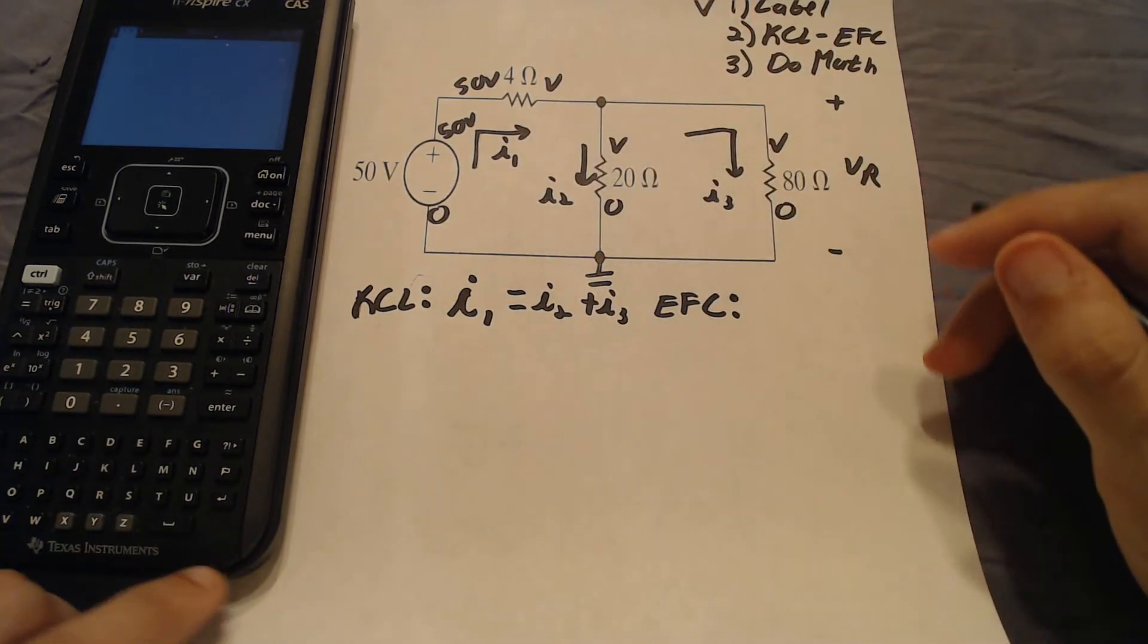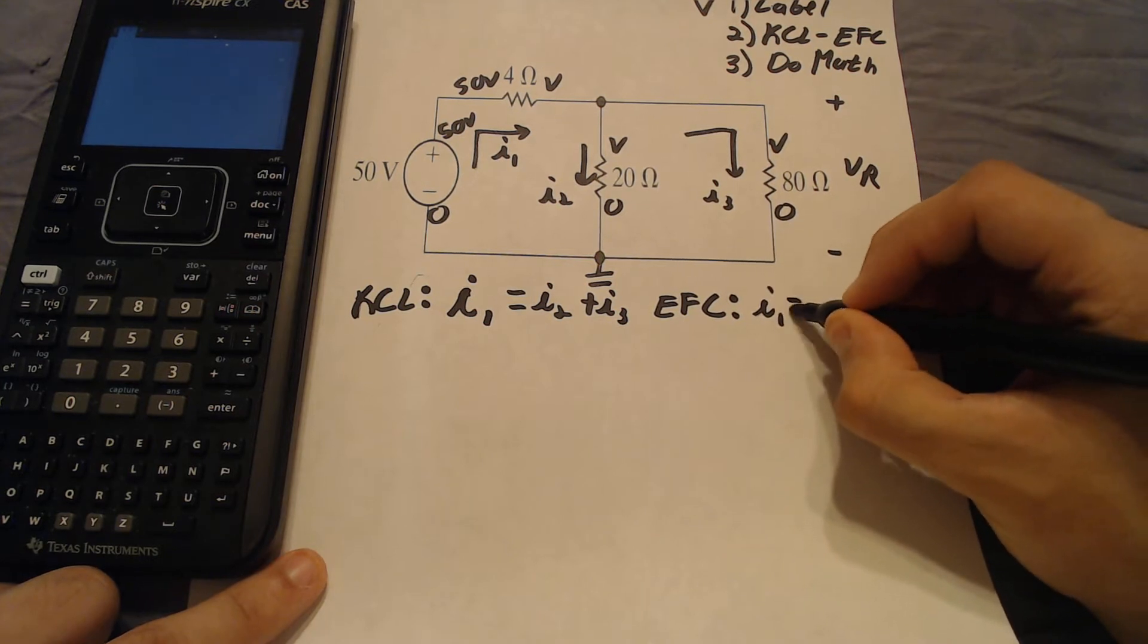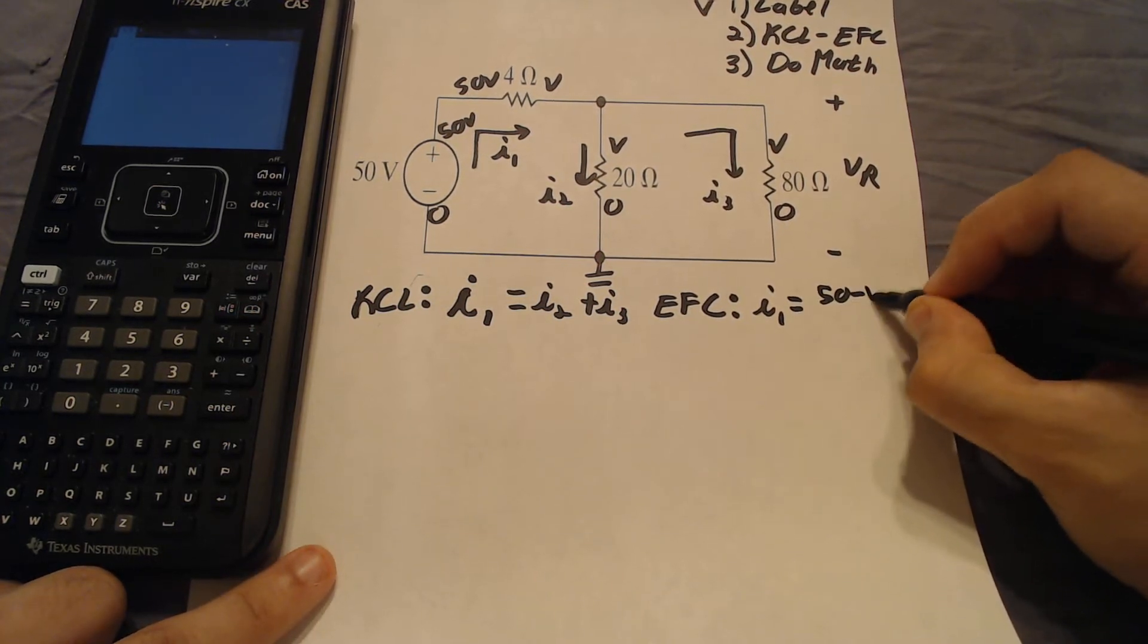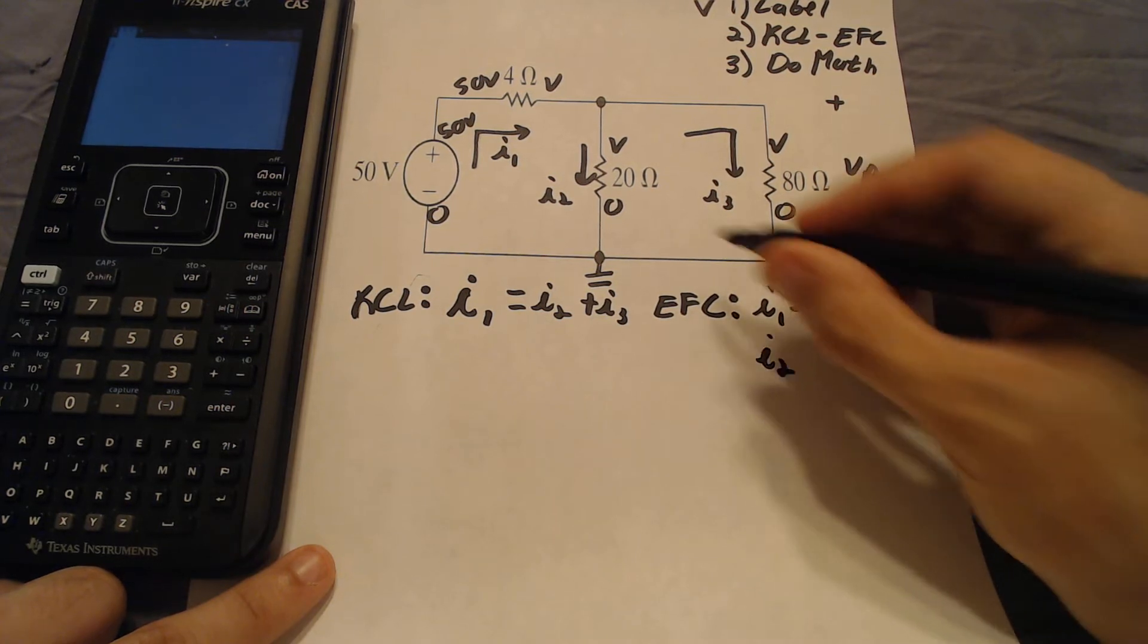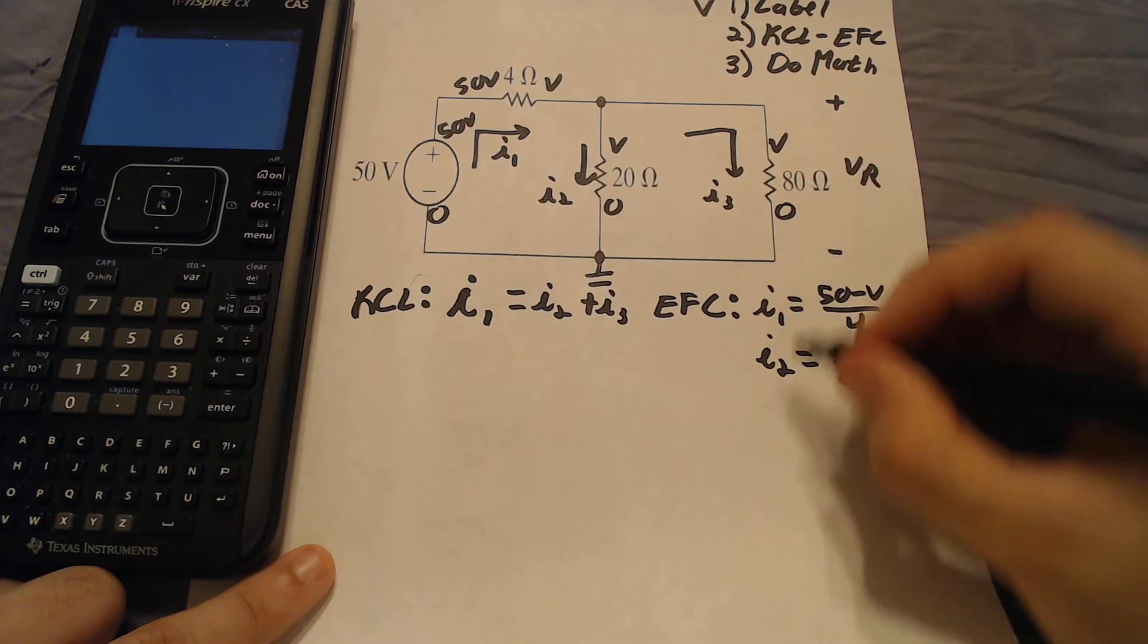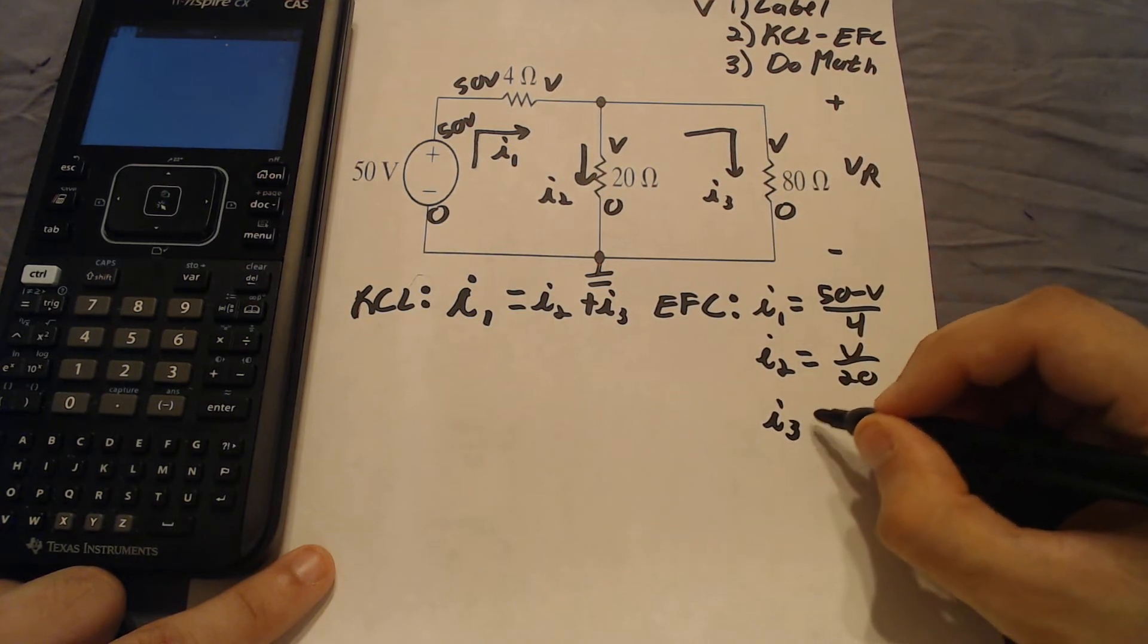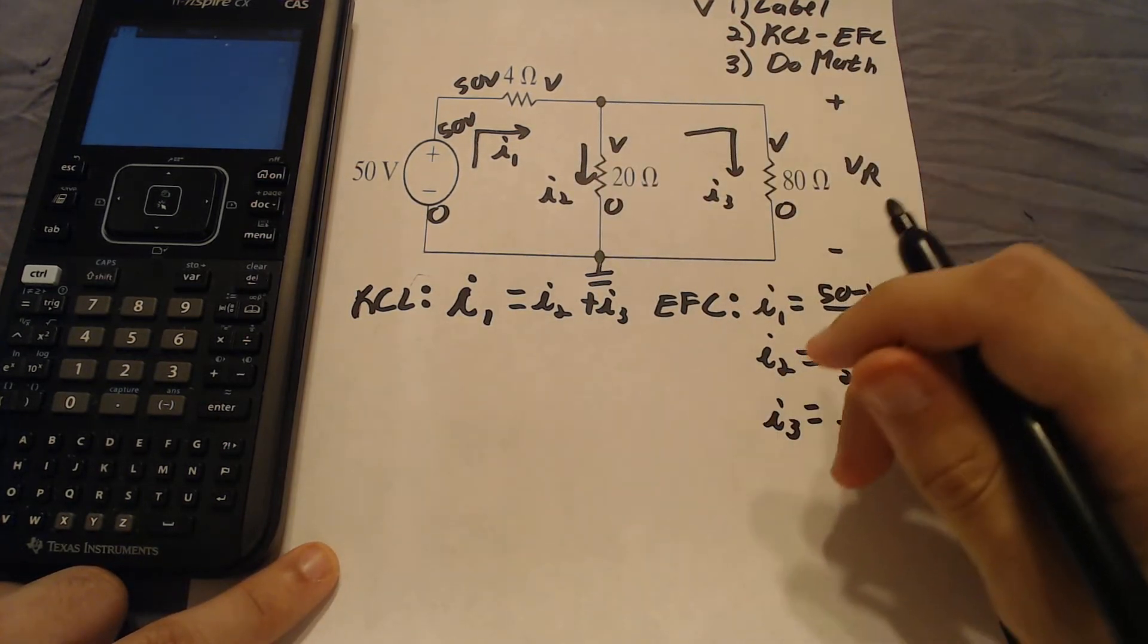So we're first going to write the equation for the top left resistor. So the equation for that resistor is going to be I1 equals 50 volts minus V over 4. I2, which is for the middle one, is going to be equal to V over 20. And I3, this is for the third one, is going to be equal to V over 80. And these are going to be our equations.